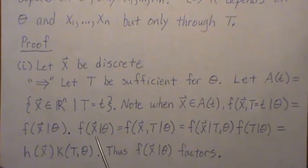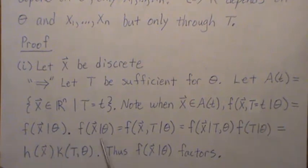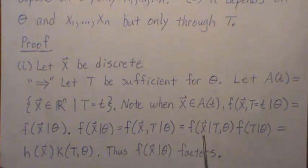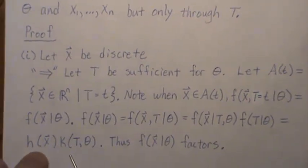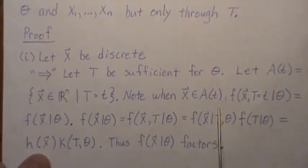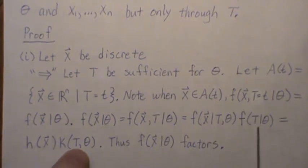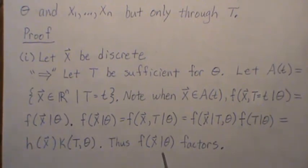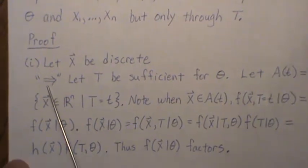Let the joint distribution f of x equal the joint of x and t, as we just showed. This joint distribution can be broken up using conditional probability into f of x given t times f of t. Since t is a sufficient statistic, f of x given t is independent of theta — it's a function of just the x's. And then the distribution of t given theta is a function of both t and theta. Thus, the joint distribution factors, and we've proved it one way.